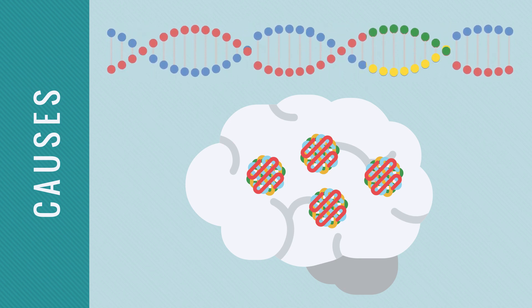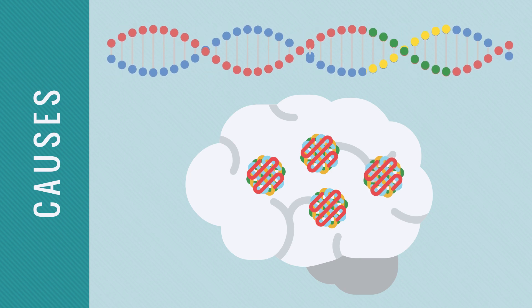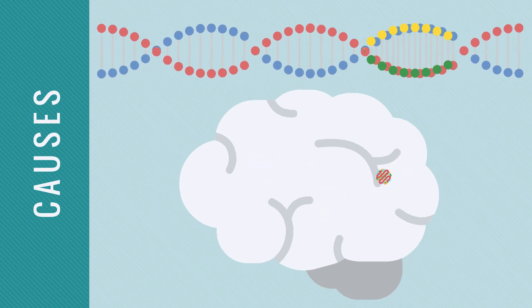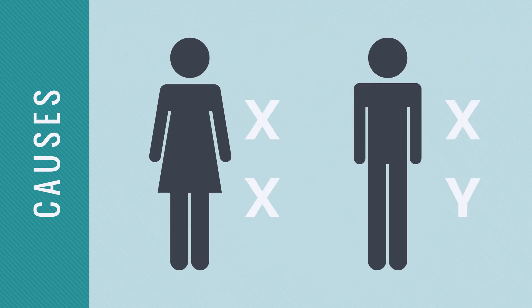Mutations on the FMR1 gene often dampen or silence the production of FMRP. Symptoms of Fragile X syndrome are less severe in females because females have two X chromosomes. If the FMR1 gene on one X chromosome is mutated, the FMR1 gene on the other X chromosome can compensate.